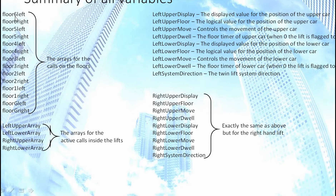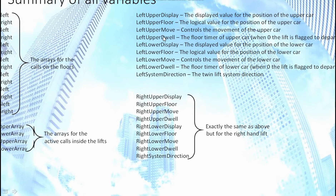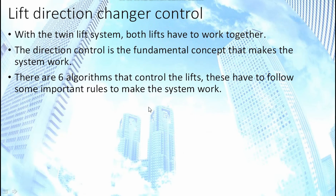Summary of all the variables: there are arrays for left and right on each floor, arrays inside each lift for active calls, then the left upper display, left upper floor, left upper move (which controls movement of the lift car), and the left upper floor timer (which controls how much time is spent on each floor). Then the same for the left lower. There's the left system direction which is either up, down, or split — and then all of that again for the right hand lifts.